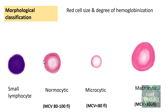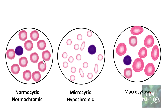As we saw in earlier tutorials, we compare the RBCs based on the size of the nucleus of the small lymphocyte, then categorize them into microcytic, normocytic, and macrocytic. Macrocytic means an MCV of more than 100 femtolitres. We categorize anemia morphologically into normocytic normochromic, microcytic hypochromic, and macrocytic anemia or macrocytosis, which is the focus of today's session.